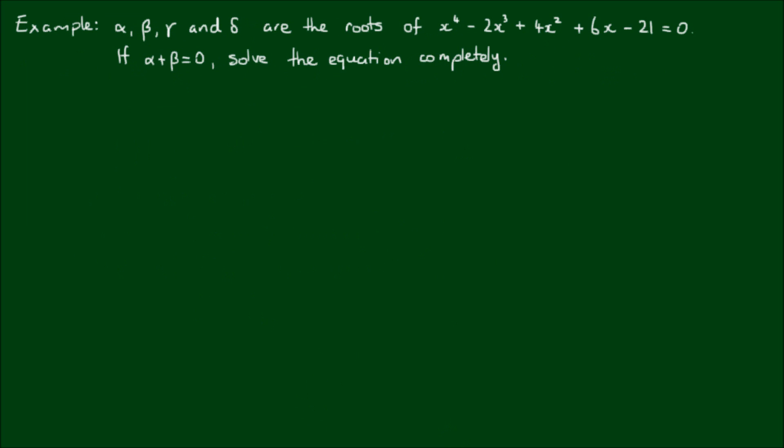Alpha, beta, gamma, and delta are the roots of x to the fourth minus 2x cubed plus 4x squared plus 6x minus 21 equals zero. If alpha plus beta equals zero, solve the equation completely.